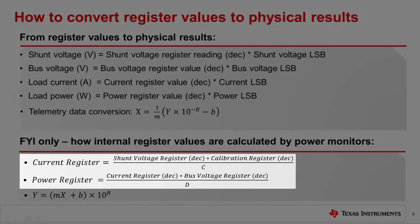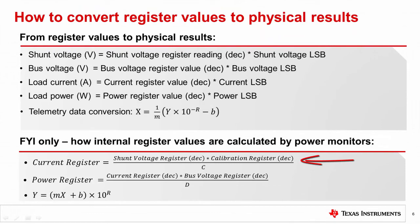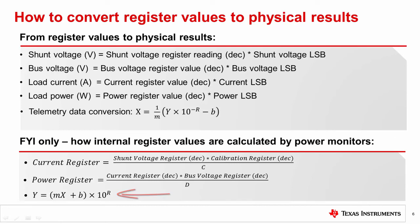Expected current and power register readings can be computed using the equations shown here at the bottom of the screen. The current register value is obtained by multiplying the shunt voltage register value by the calibration register value, and it is divided by a constant C. For the power register, multiply the current register value by the bus voltage register value, and divide by another constant D. Please refer to the datasheet to find out the values for C and D. Alternatively, the same results can be reached with the telemetry data formula found in some datasheets. Keep in mind that these calculations are not required, but they can be useful to help predict register values for a given application.